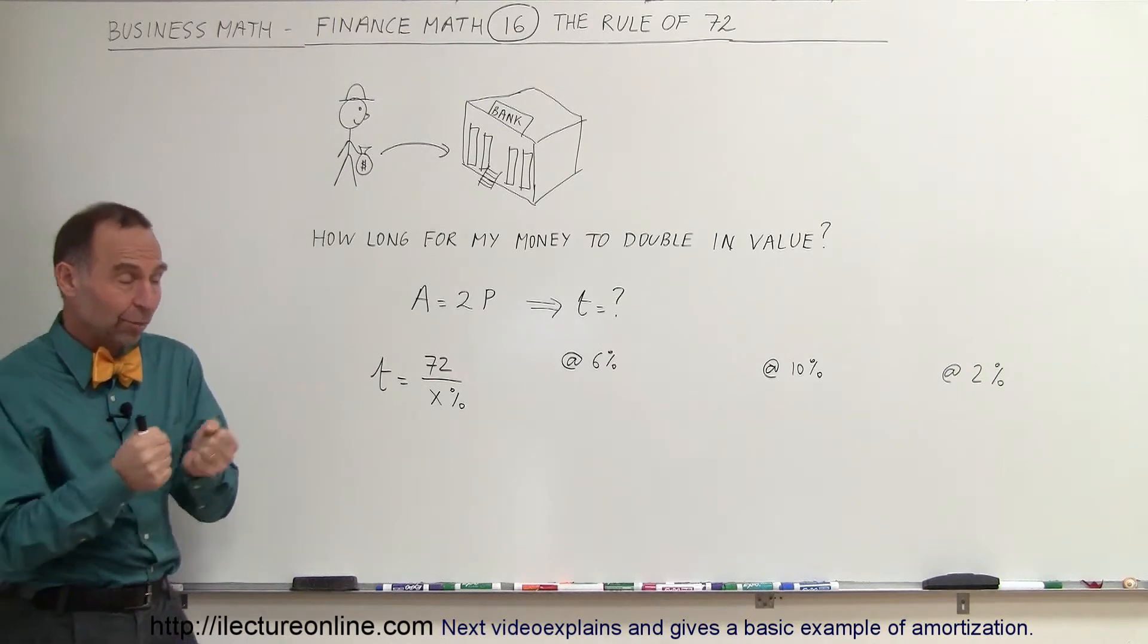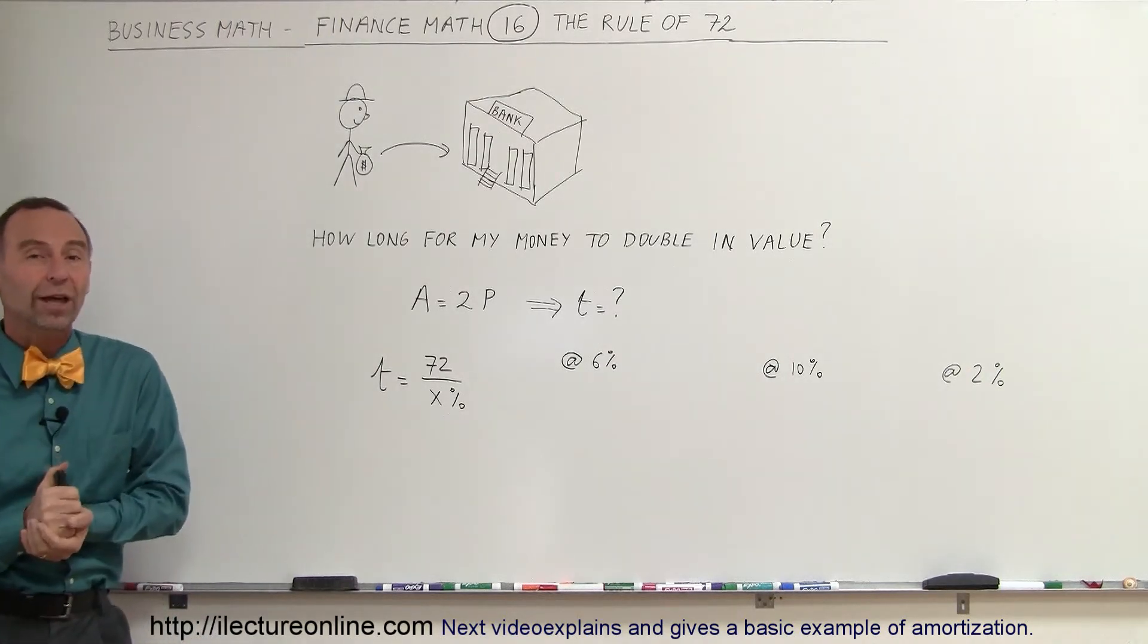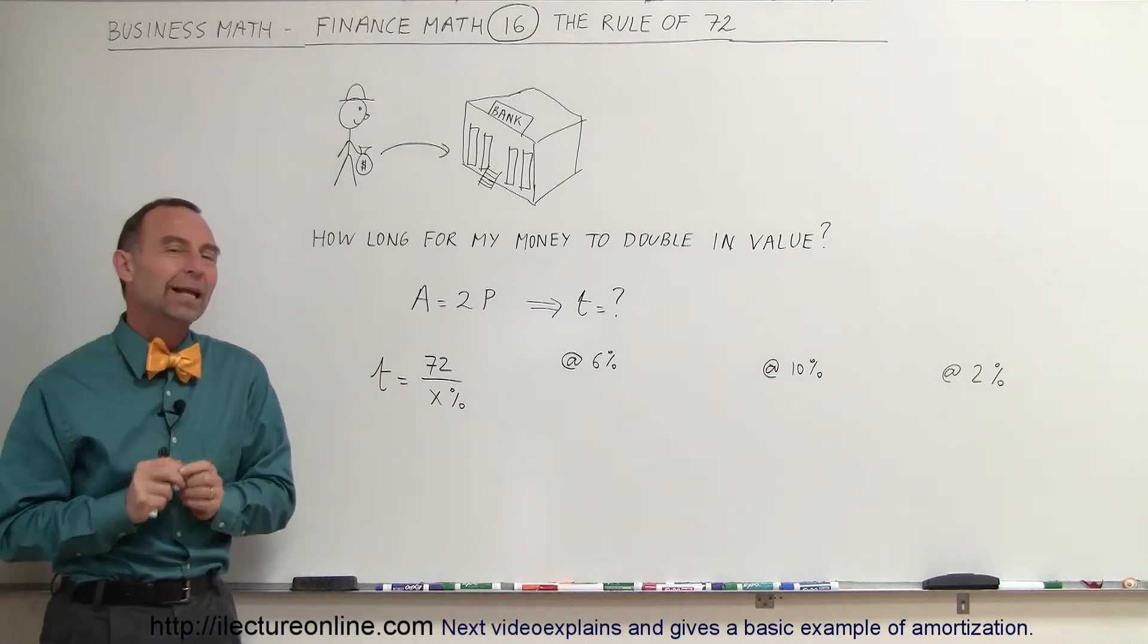Let's say you have $1,000, you want to bring it to the bank, and you wonder when that $1,000 will become $2,000. Well, the Rule of 72 will give you a pretty good idea.